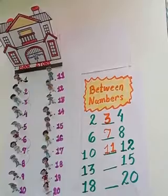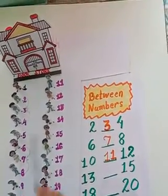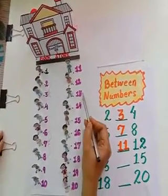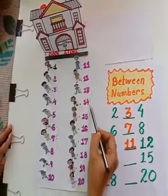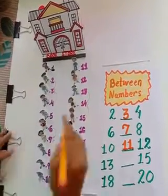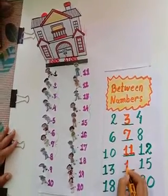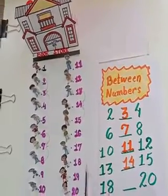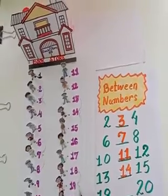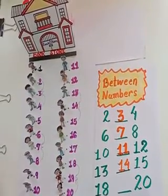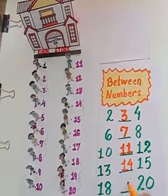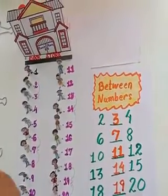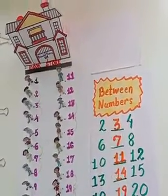Now tell me children, which child is standing between child number 13 and child number 15? Very good — child number 14. So we have found out all the between numbers. Thank you children.